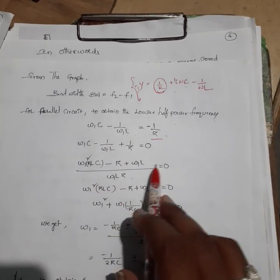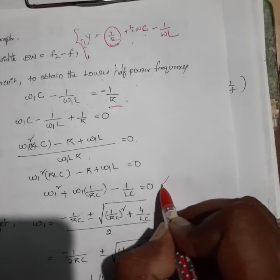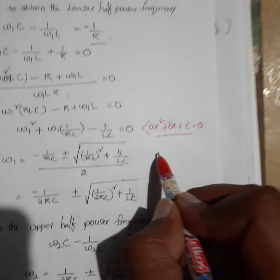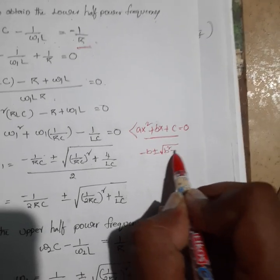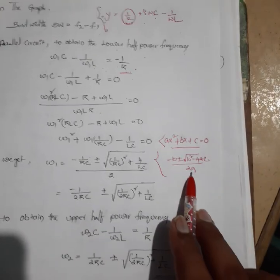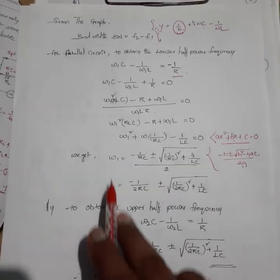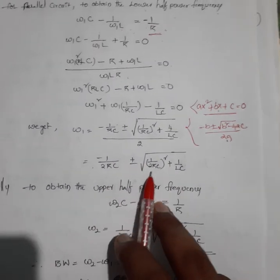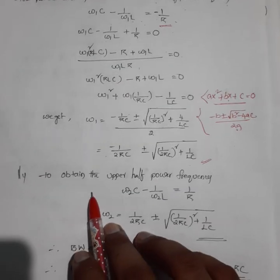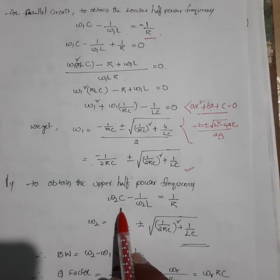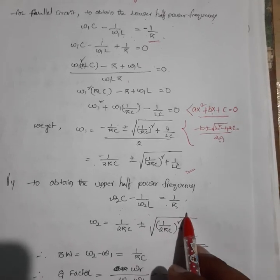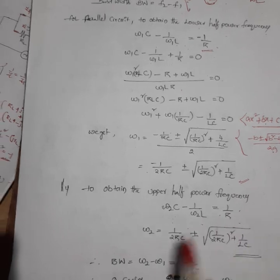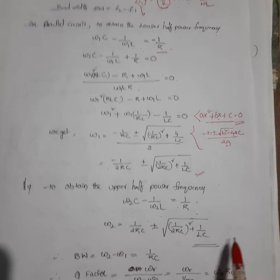The quadratic equation is in the form Ax² + Bx + C = 0, and the roots are calculated using the quadratic formula: (−B ± √(B²−4AC)) / 2A. Solving gives: ω₁ = −1/(2RC) + √((1/(2RC))² + 1/(LC)). Similarly for the upper half-power frequency: ω₂ = +1/(2RC) + √((1/(2RC))² + 1/(LC)).